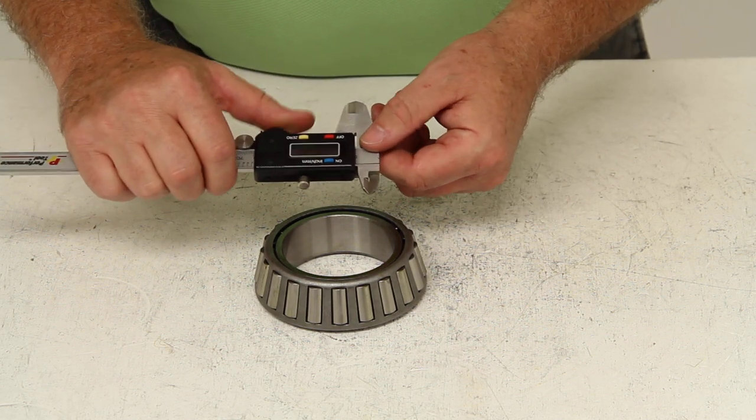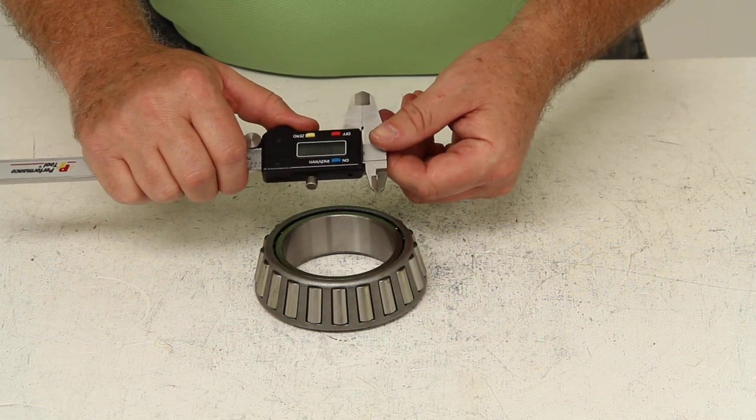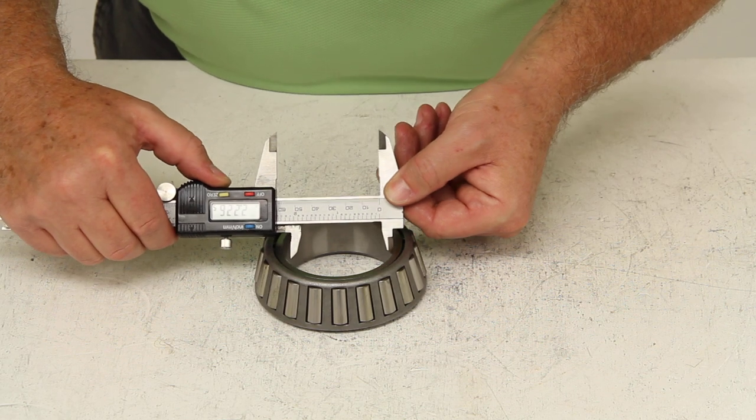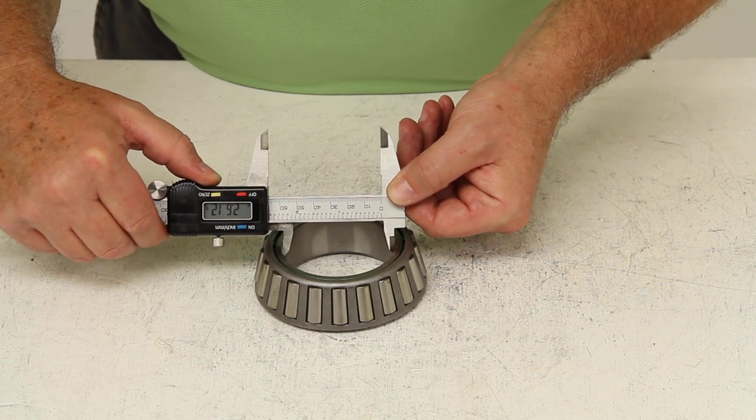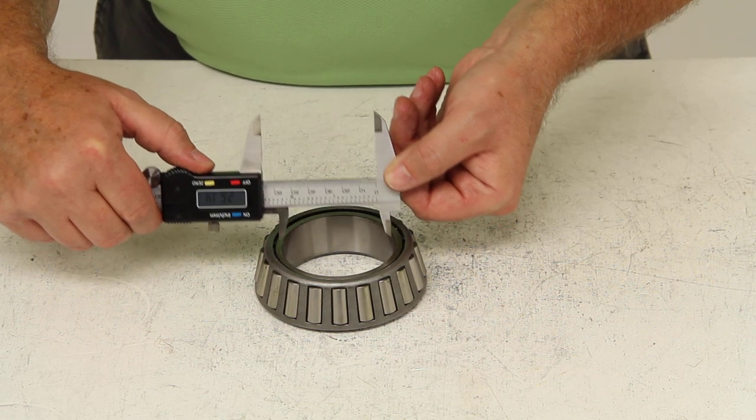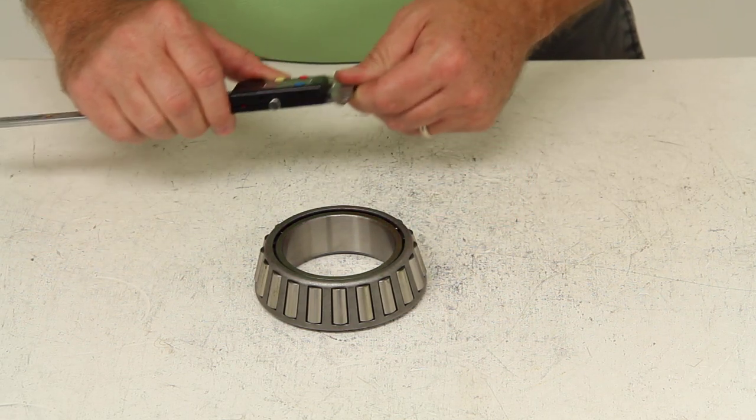Most of the time, the numbers are extended out to a thousandth of an inch. In this case, when we measure the inner bearing, it measures 2.625 inches. That would be your critical measurement.